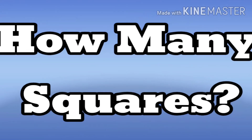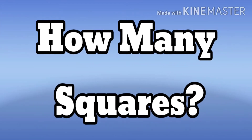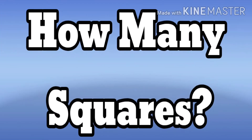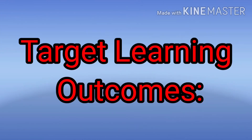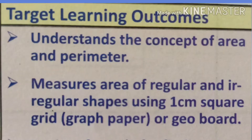That is Lesson 3. The name of the lesson is 'How Many Squares.' The learning outcomes of this lesson are as follows. Number one: you can understand the concept of area and perimeter.